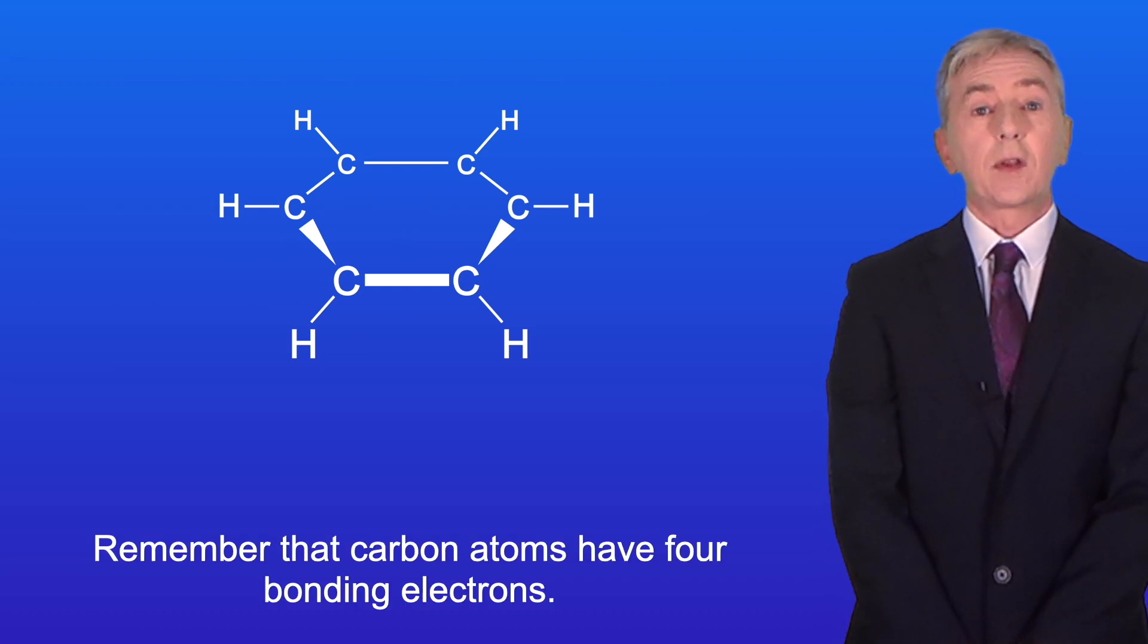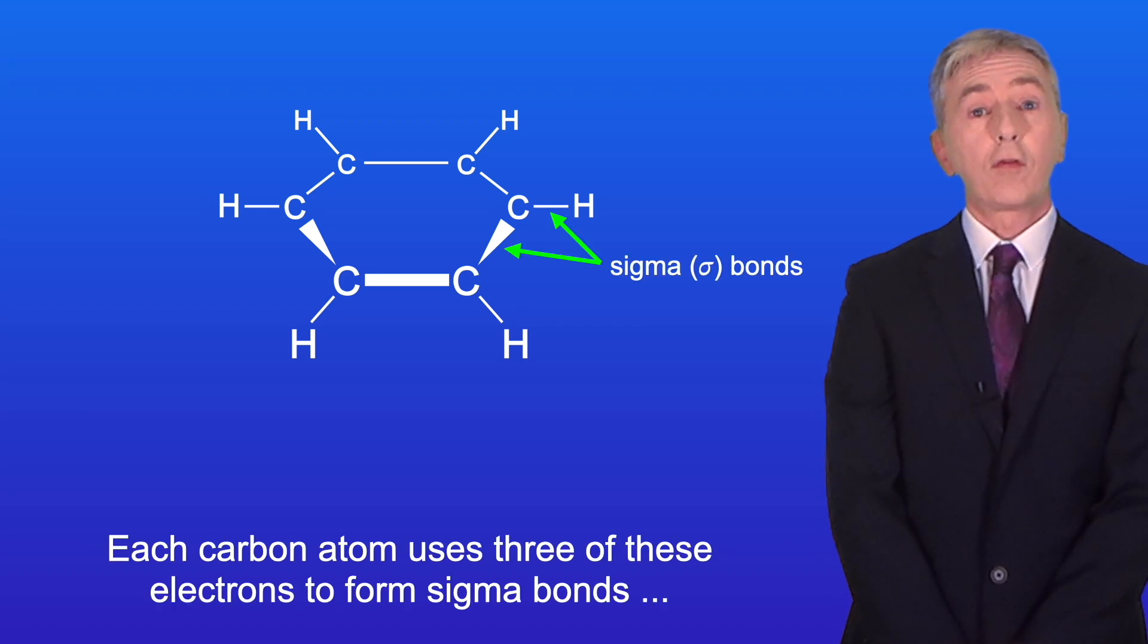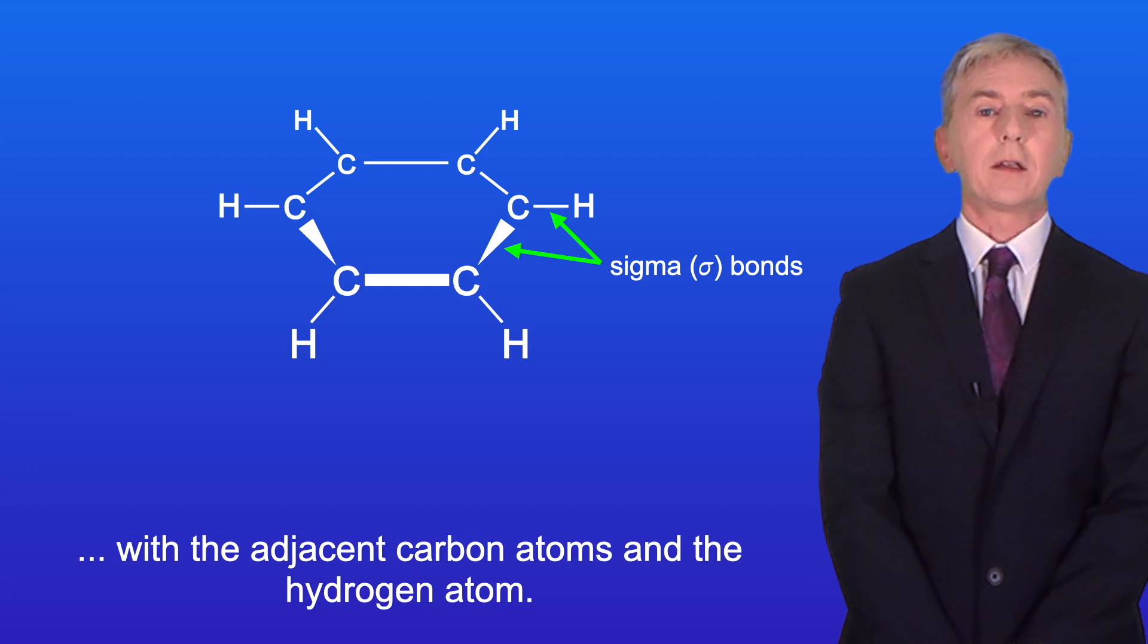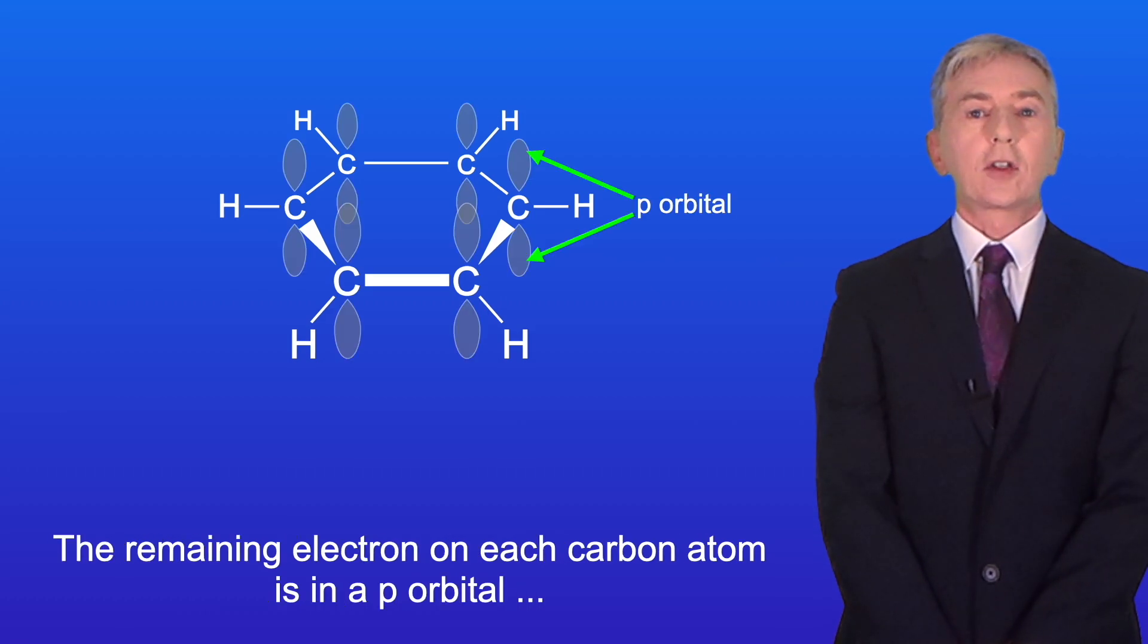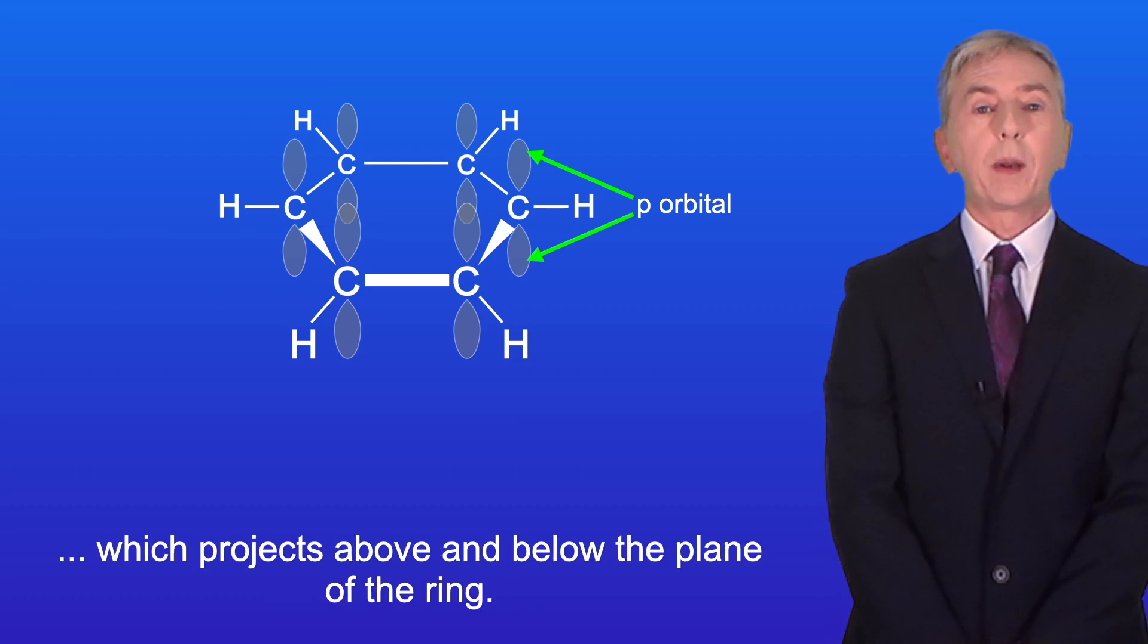Remember that carbon atoms have four bonding electrons. Each carbon atom uses three of these electrons to form sigma bonds with the adjacent carbon atoms and the hydrogen atom. The remaining electron on each carbon atom is in a p orbital, which projects above and below the plane of the ring.